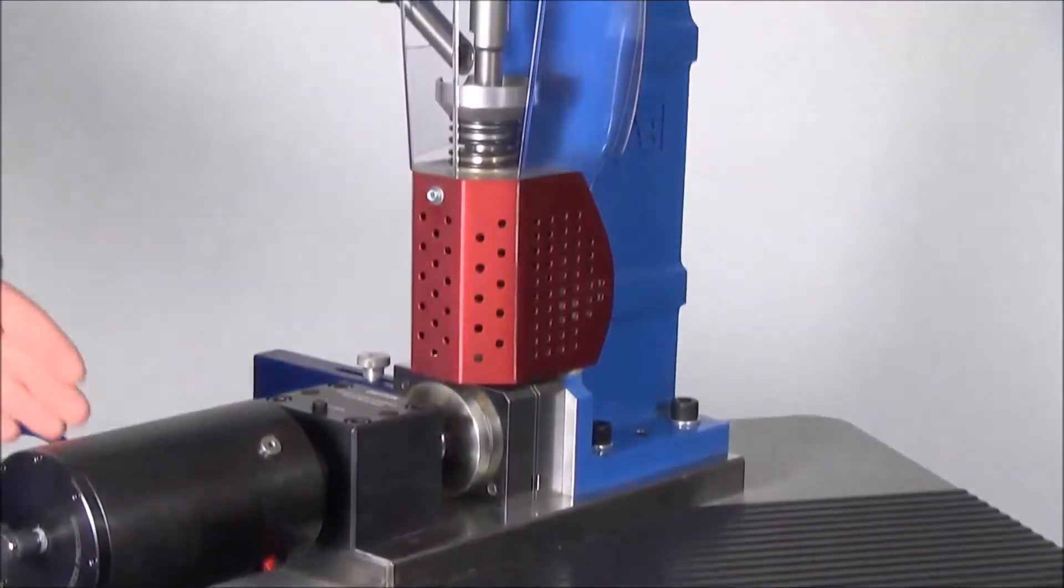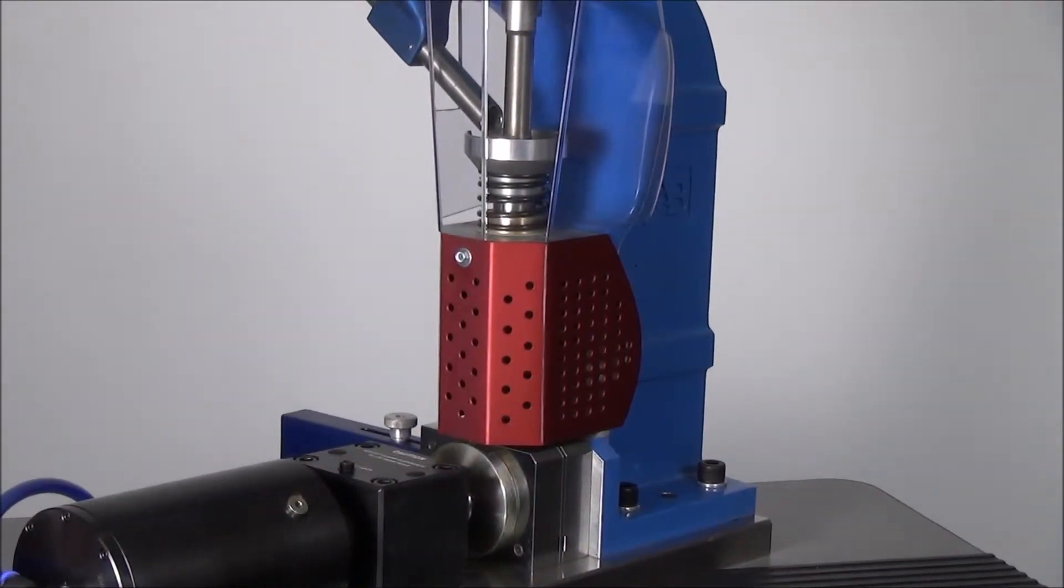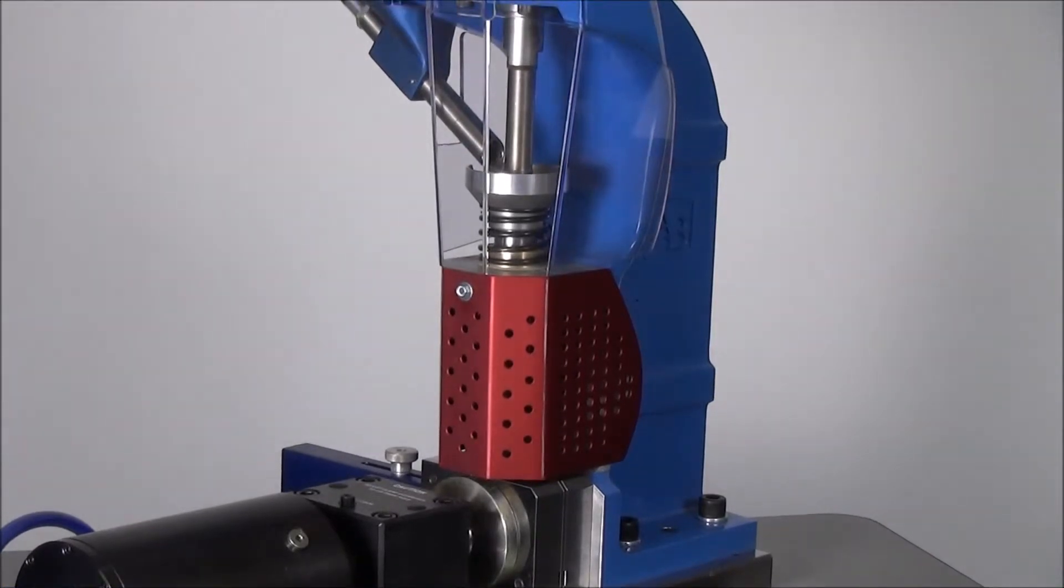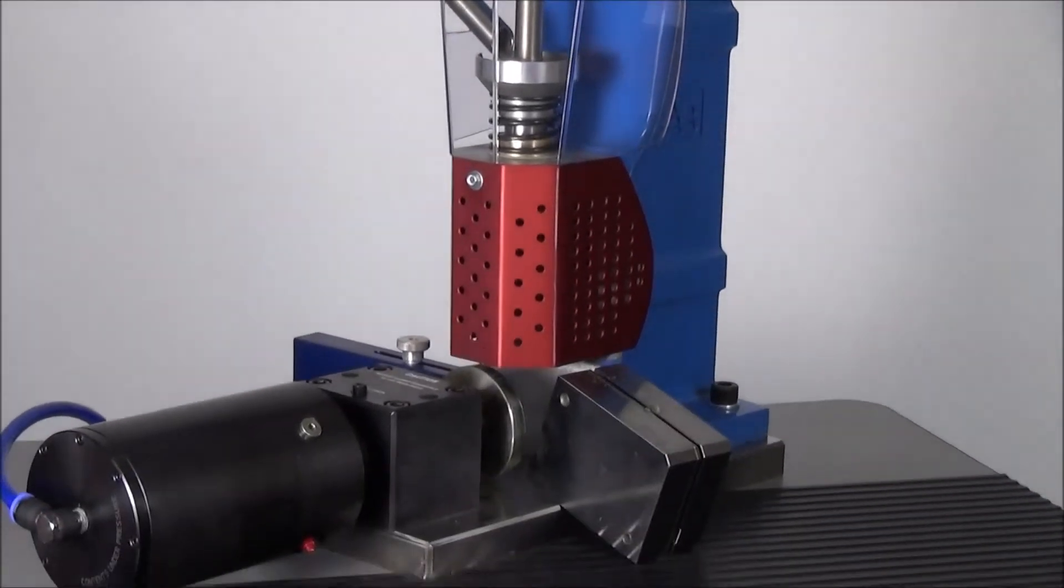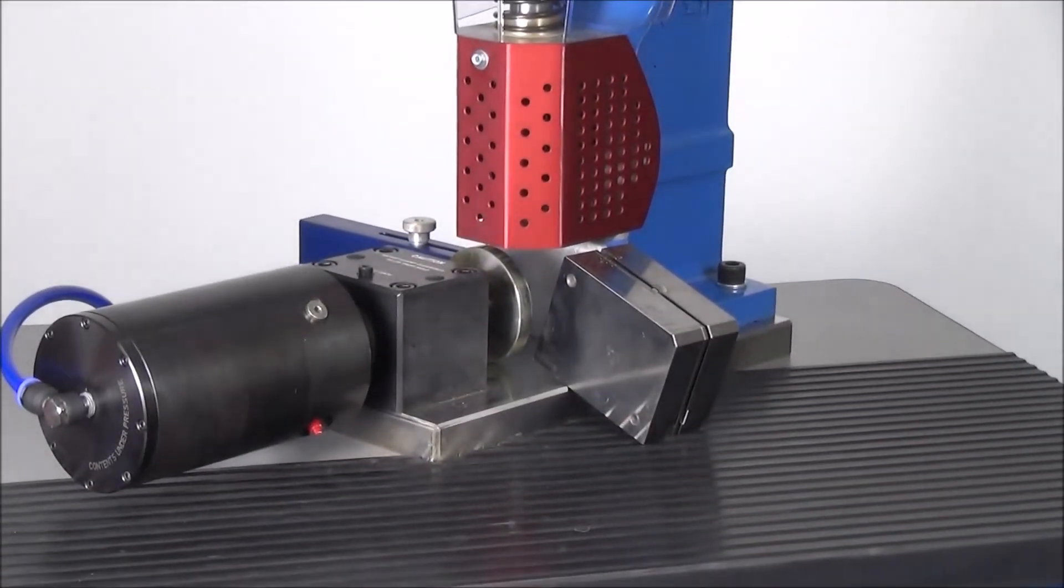The machine clamps the mold, injects the material, then unclamps and ejects the mold. The operator opens the mold and removes the part and closes the mold to prepare for the next injection.